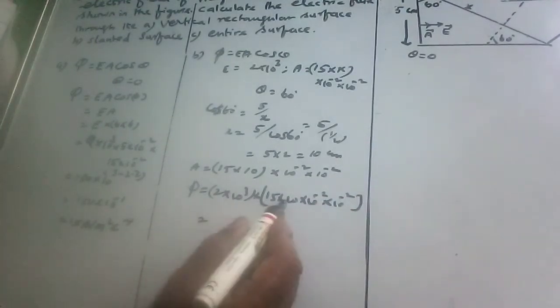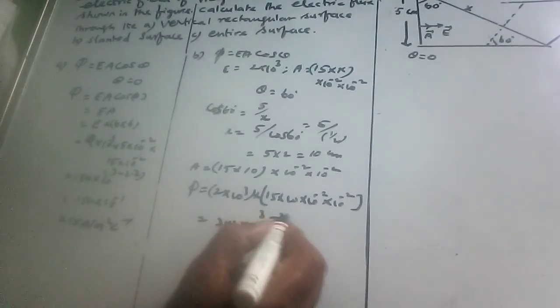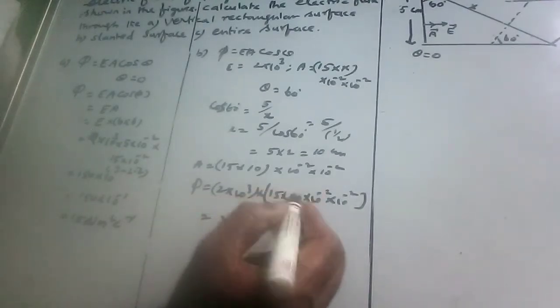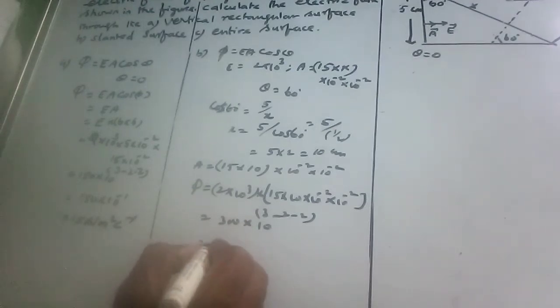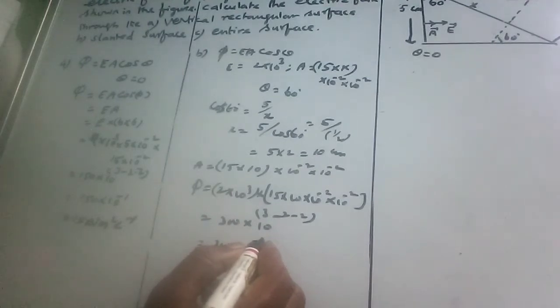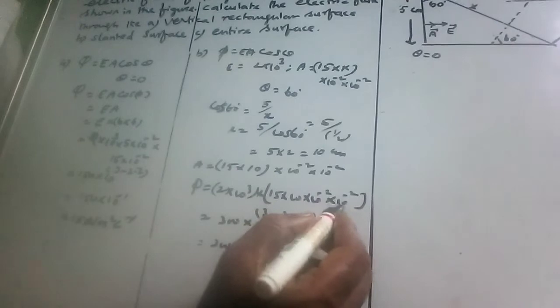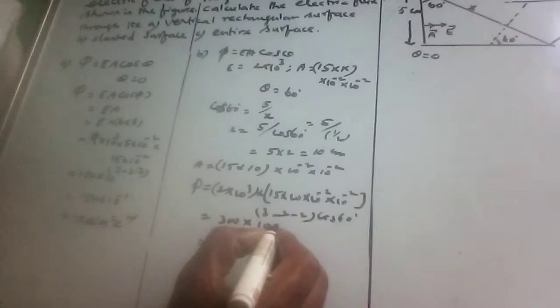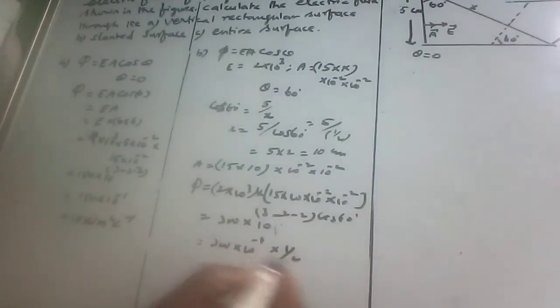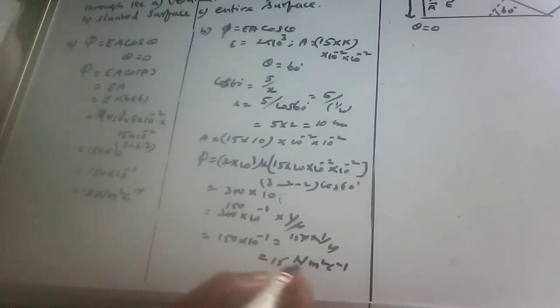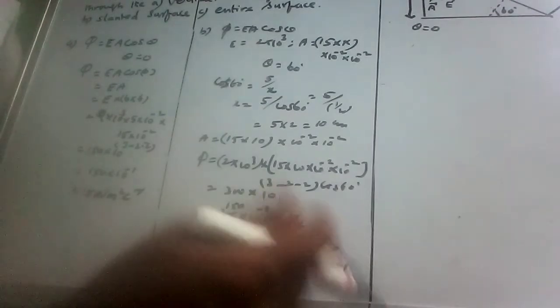So 30 into 10, that's 300 into 10 power 3 minus 2 minus 2, which is 10 power minus 1. So 300 into 10 power minus 1. The angle is equal to 60 degrees, so phi equals EA cos 60 degree, and cos 60 is equal to 1 by 2. So we get 150 into 10 power minus 1, which equals 15 newton meter square per coulomb. Same as the first case, 15 newton meter square per coulomb.